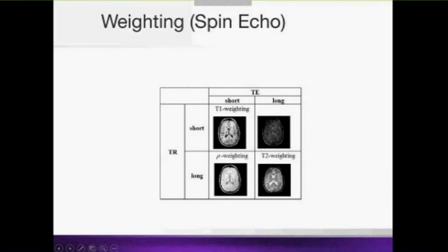With a long TE and long TR you get T2 weighting, where the contrast is inverted compared to T1 — white matter is darker and cerebrospinal fluid appears bright white. This is very powerful: just by changing two parameters we can create many different contrasts, something that is absolutely not possible with CT scanning, which has no such flexibility. Some lesions are not visible on T1 but are visible on T2, and in other parts of this webinar series you will see much more complex acquisitions such as functional MRI, diffusion MRI, and MR angiography.